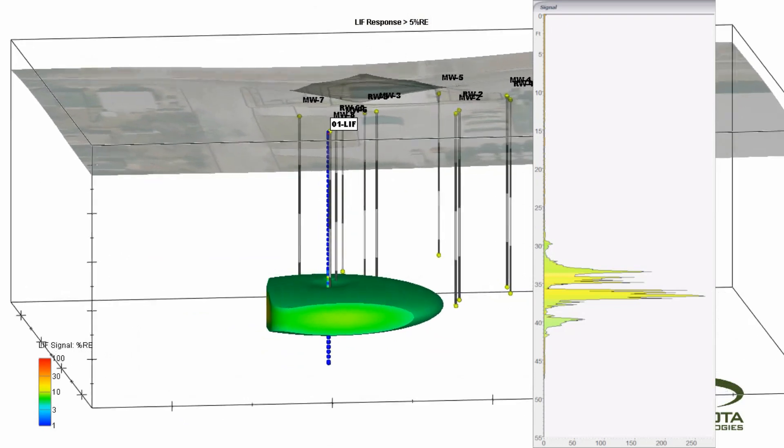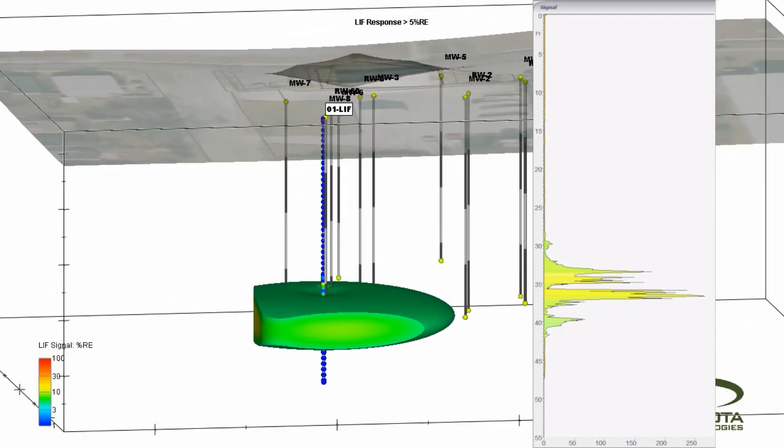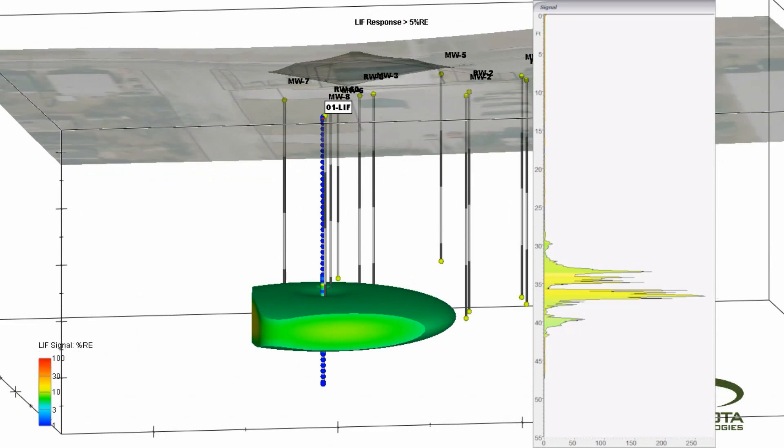It also shows the LIF response logs for some of the pushes. The log shown here indicates LNAPL is present from about 30 to 40 feet deep.